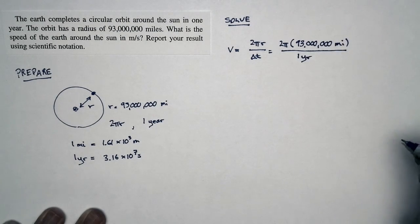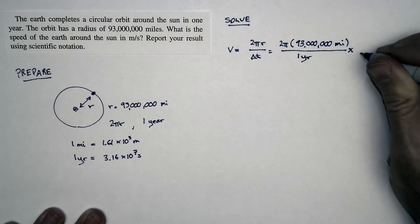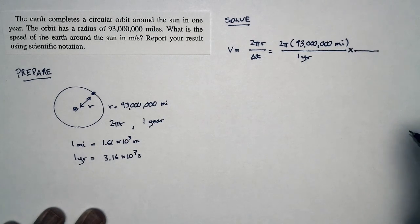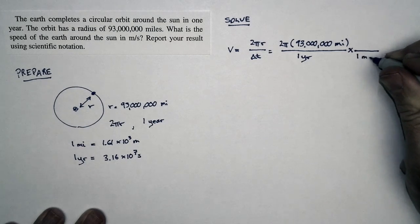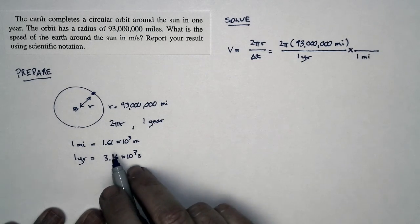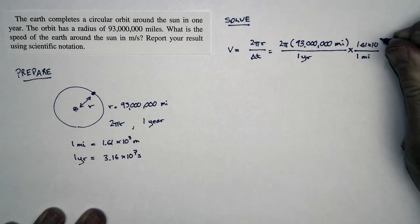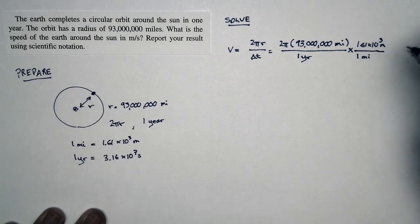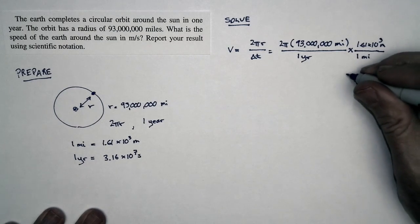Then the rest is just conversion factors. We want to convert from miles to meters, so we're going to multiply by a factor of one. In the denominator is one mile. In the numerator is 1.61 times 10 to the third meters. This is basically a factor of one. It doesn't change the answer, just changes the units.